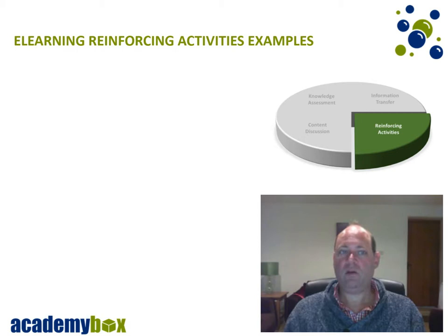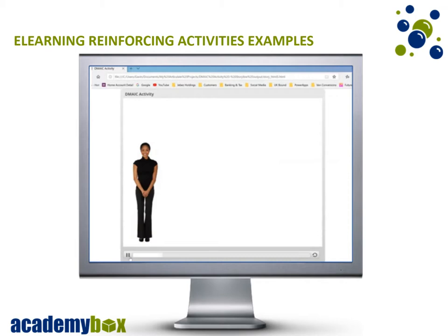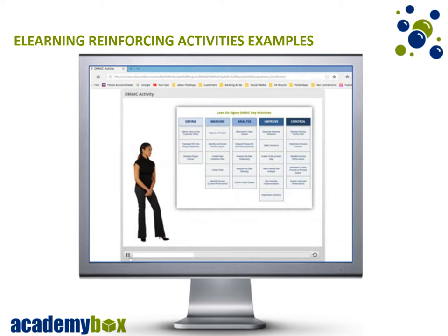Here is an example of a simple reinforcing activity I've used previously on one of my courses. This activity could be done either individually or in groups. You need to review the Lean Six Sigma DMAIC Key Activities Diagram on page 94 of your course notes. Once familiar with the diagram, you can start the activity. You need to drag the cards into the correct DMAIC column — if you try placing the cards in the incorrect column, the cards will jump back into the stack. When you are ready to start the activity, click on the Start Activity button.